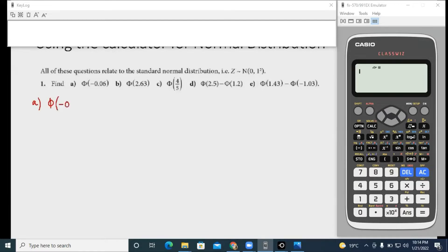You have phi of minus 0.06. Now what you are trying to calculate here is the area to the left side of the normal distribution. Now of course your calculator is capable of doing that too.